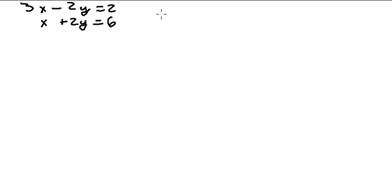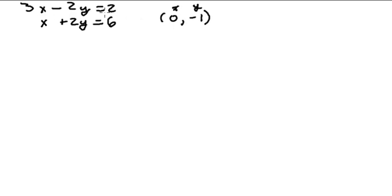Let's see if the point (0, negative 1) is a solution to this system of linear equations. If it's a solution, then with x equals 0 and y equals negative 1, this point must satisfy both equations. To check, we'll plug in 0 for x and negative 1 for y into both equations.